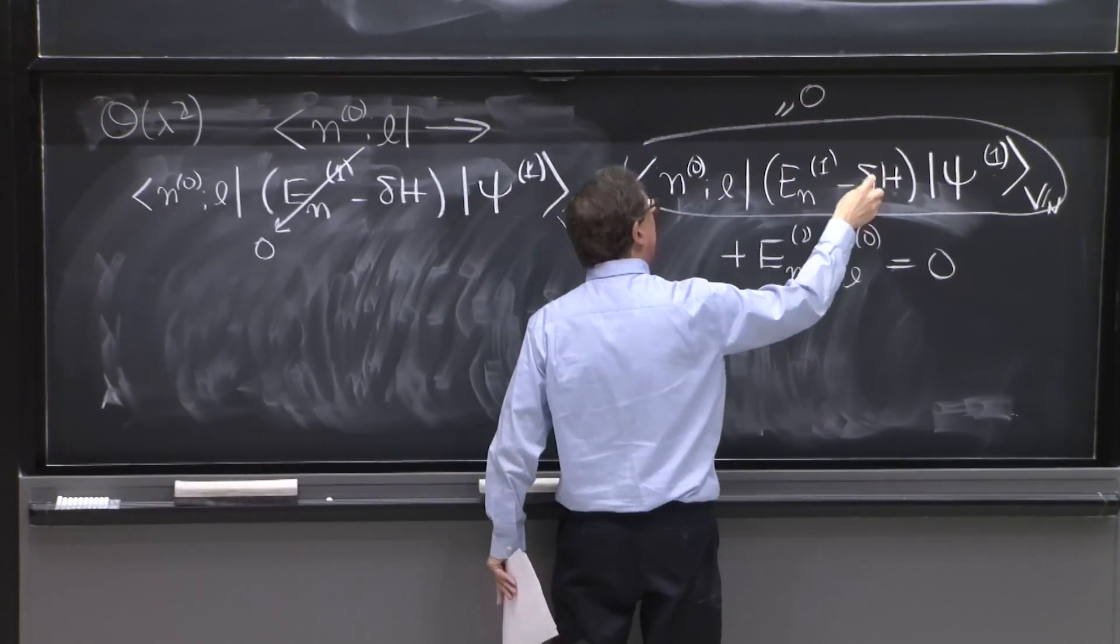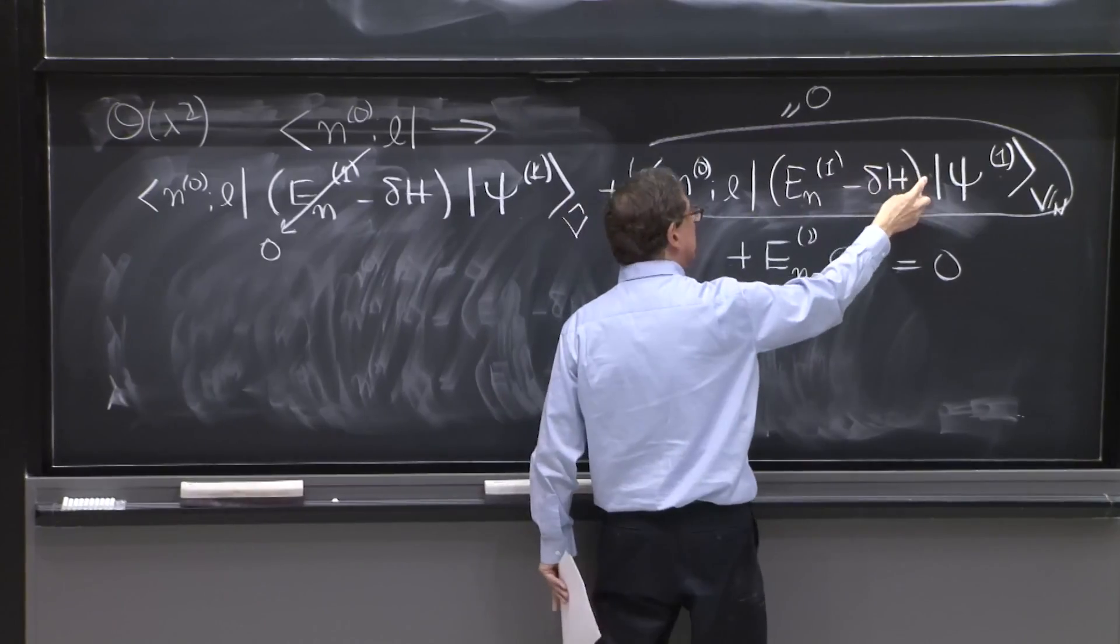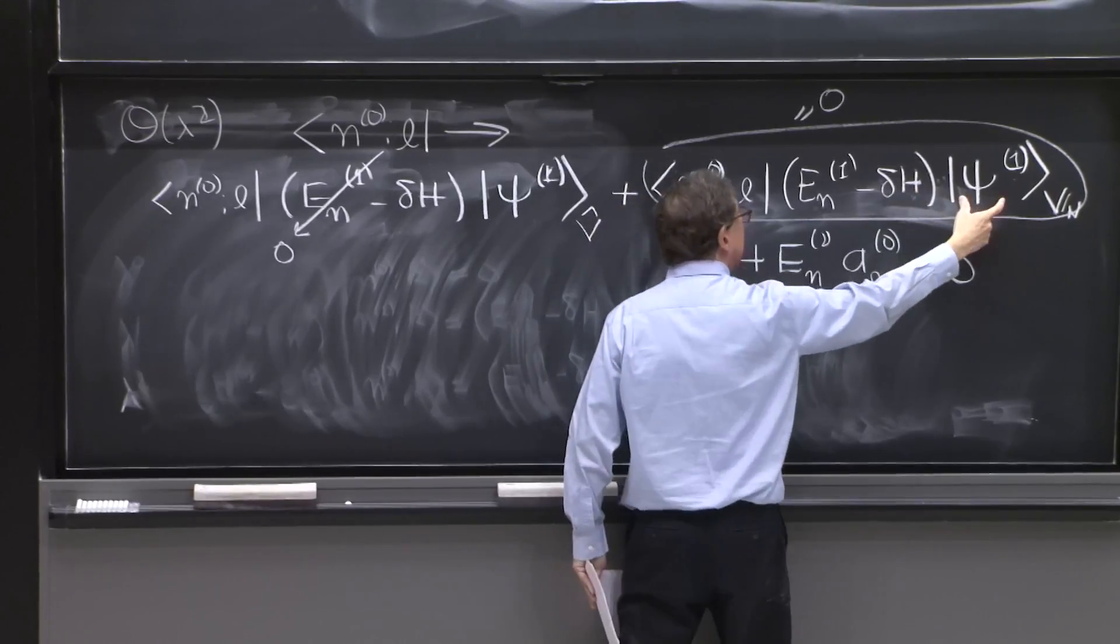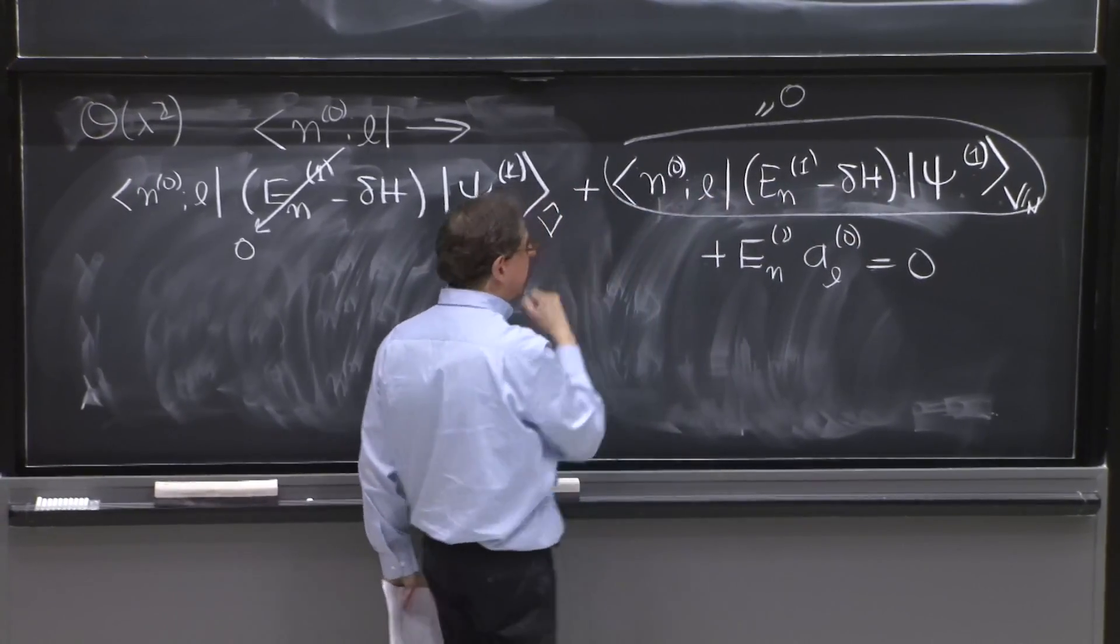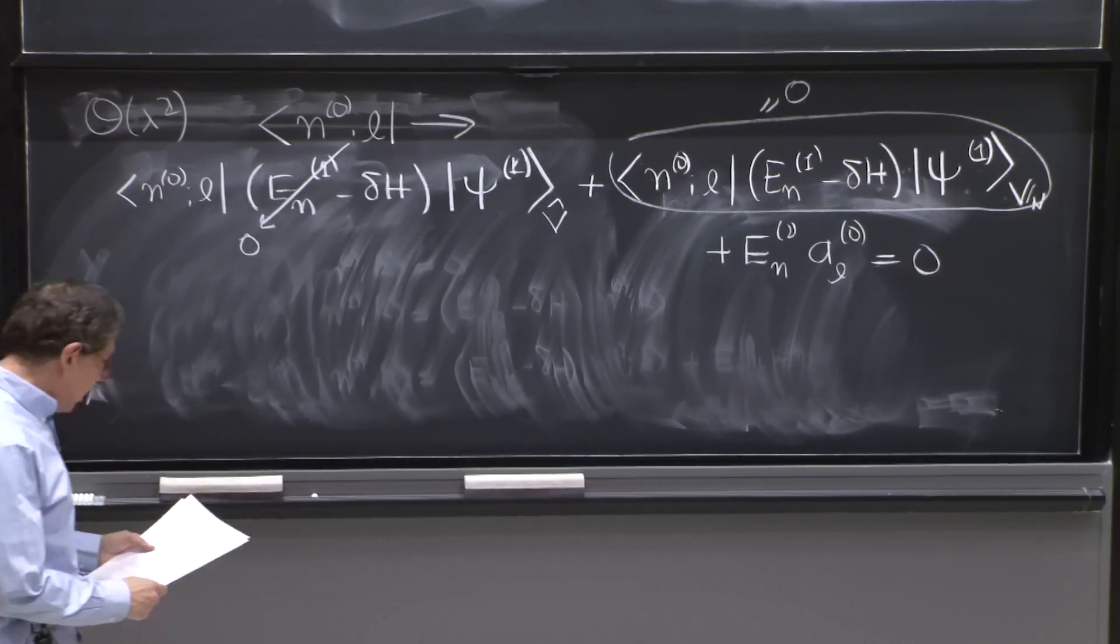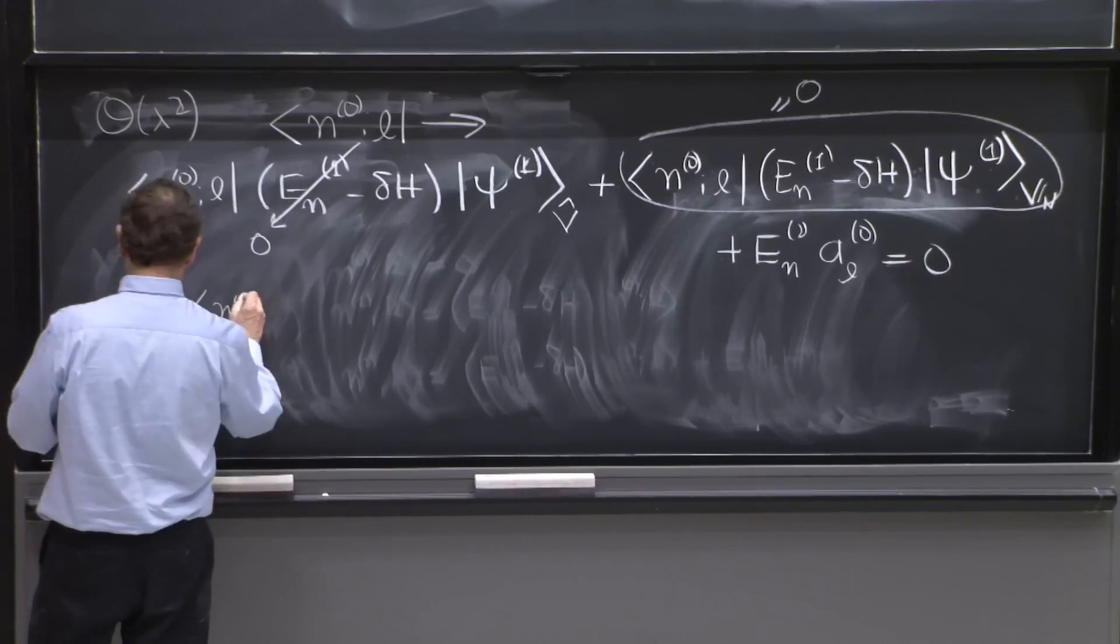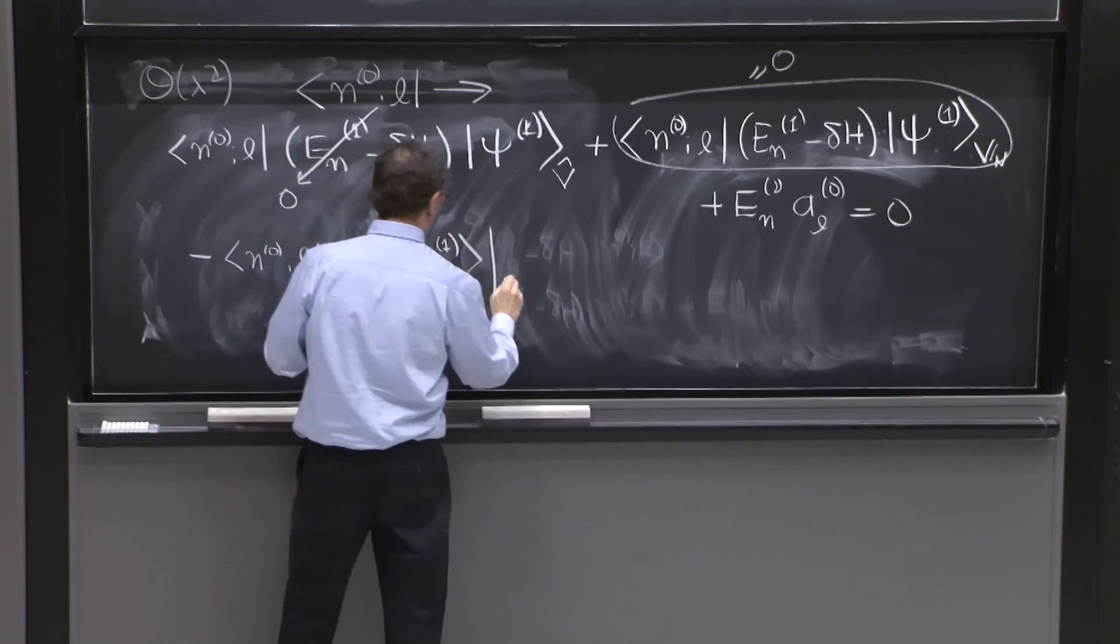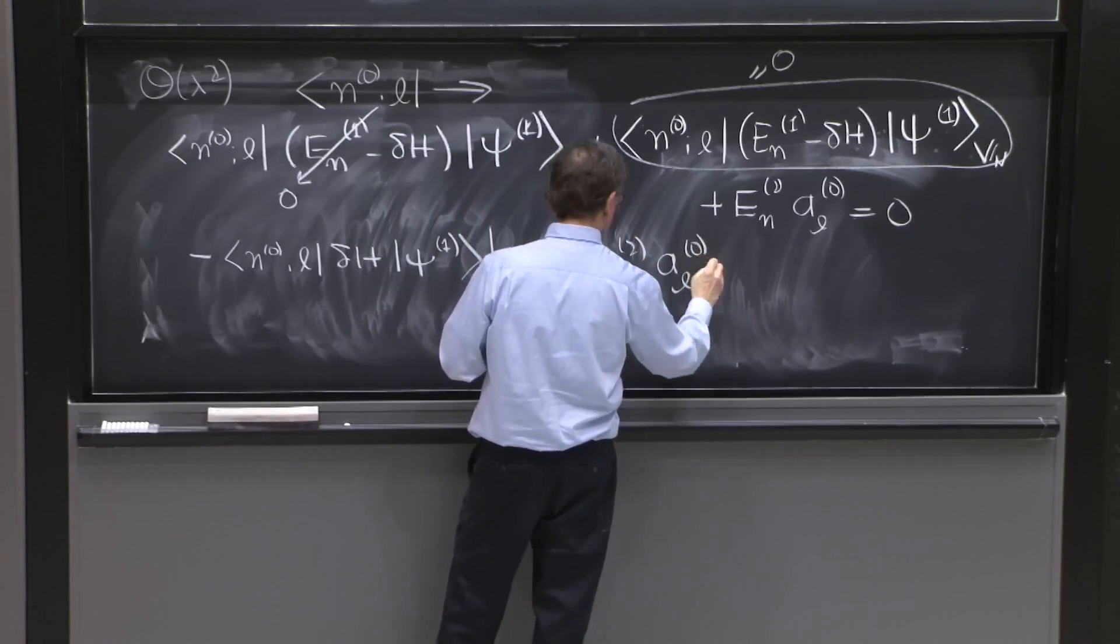So it's again this delta H. We did it with a resolution of the identity. I hope you remember that argument. If you don't, look at it back later. But with a resolution of the identity, we argued that delta H, when acting on a state of V_n on the right, you can assume that this is an eigenstate of it. So this whole term is zero. So now we are in pretty good shape. In fact, the equation is not that bad. The equation has become minus n0 L delta H psi 1 on v hat plus E_n^2 A_L^0 equals zero.